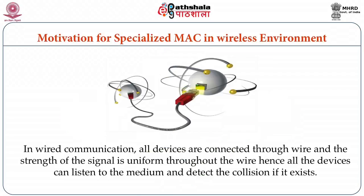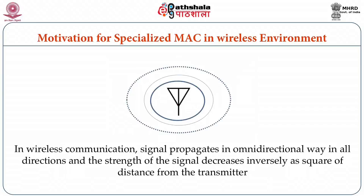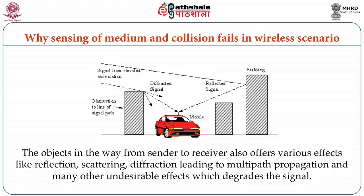This scheme works very well in wired communication because all devices are connected through wire and the signal strength is uniform throughout, so all devices can listen to the medium and detect collisions. But this method of sensing and collision detection might not work in wireless or mobile networks. In wireless networks, the signal propagates omnidirectionally and the strength decreases inversely as the square of distance from the transmitter. Also, objects in the way cause reflection, scattering, and diffraction, leading to multipath propagation and other undesirable effects which degrade the signal.